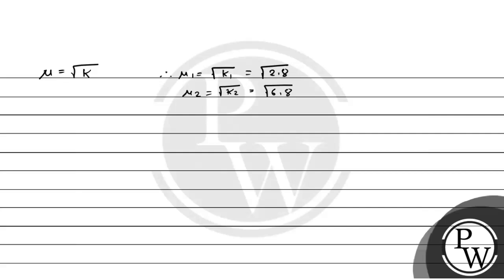Now what do we have to find? tan i equals μ2 by μ1, that means i equals tan inverse of μ2 by μ1. So this equals tan inverse of square root of 6.8 by square root of 2.8.